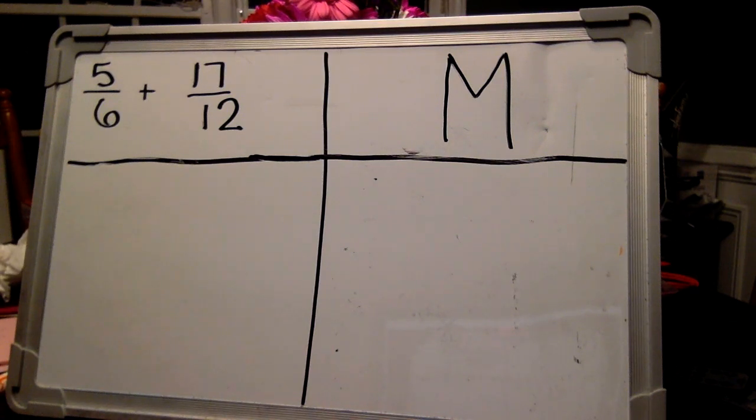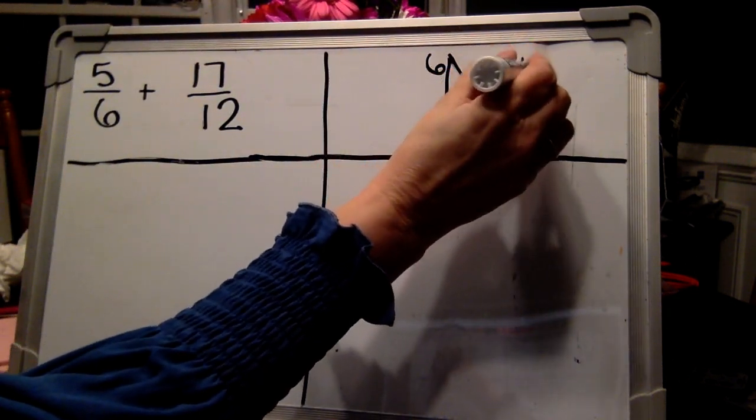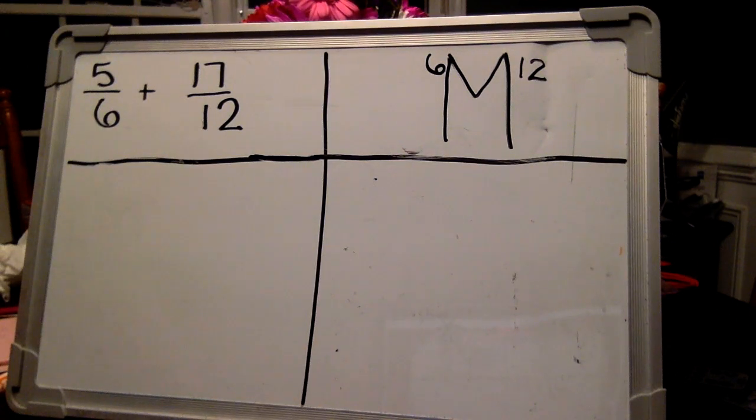What numbers do we need to put on our M? Six and twelve is correct. Okay. Pause the video and see if you can figure out what the least common multiple is. Did you find twelve? Great!